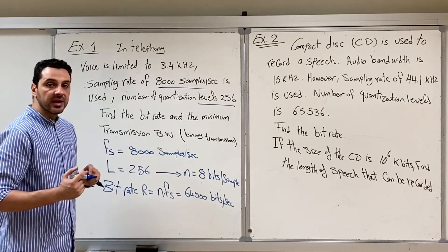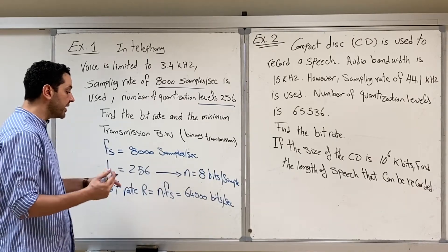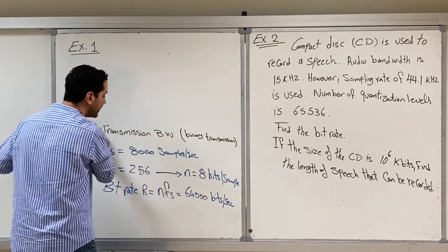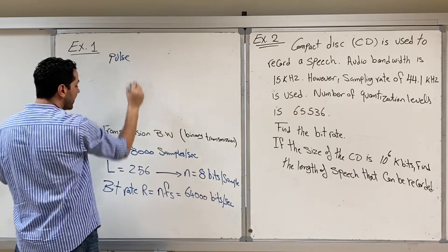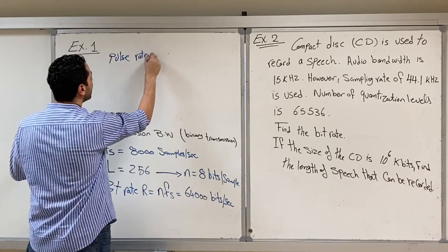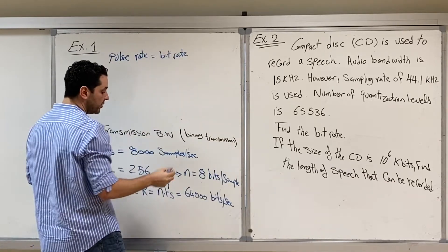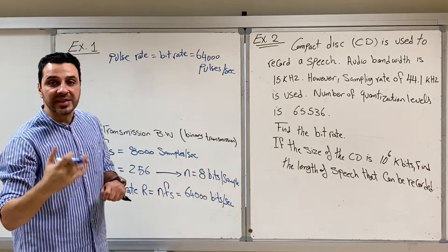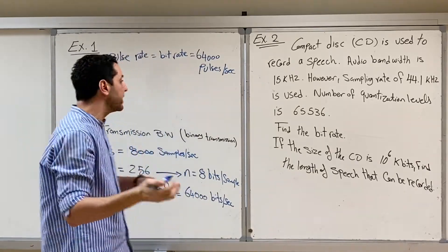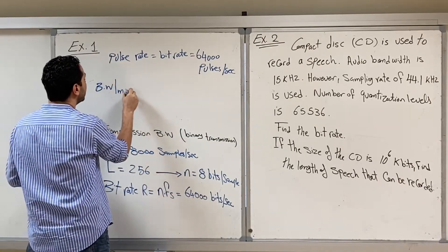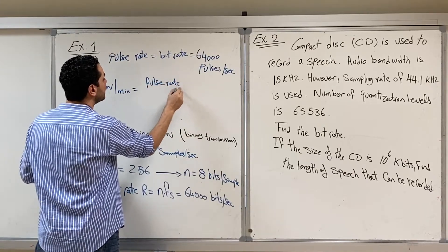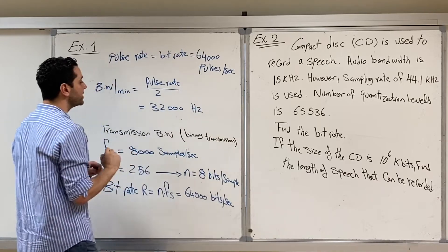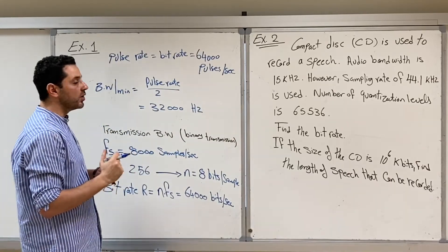Given binary transmission, the pulse rate equals the bit rate. So the pulse rate is 64,000 pulses per second. Since every pulse carries one piece of information, the minimum bandwidth equals the pulse rate divided by two, which gives 32,000 Hz. This is the minimum bandwidth required to transmit voice signals over telephone lines.